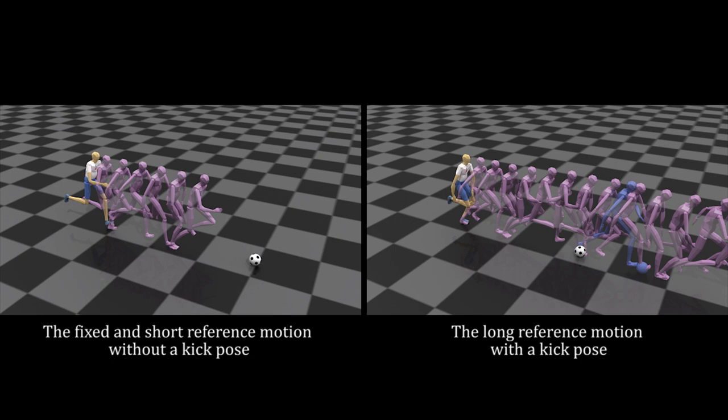Effect of a kick pose in a reference motion. When using a fixed and short reference motion which does not contain a kick pose, the character kicks the ball abruptly or ends up losing the ball.